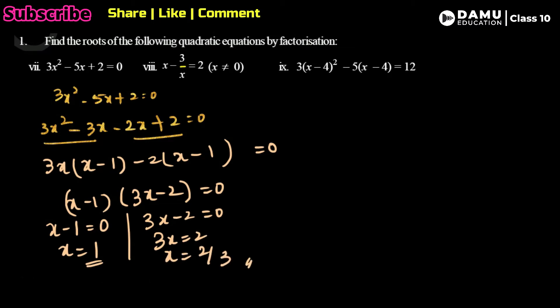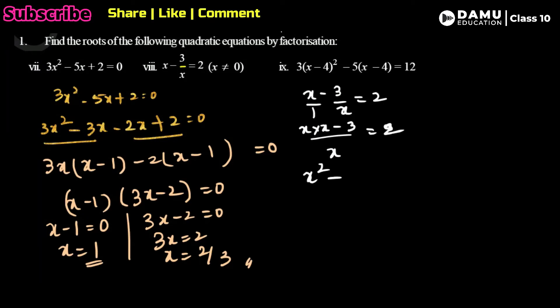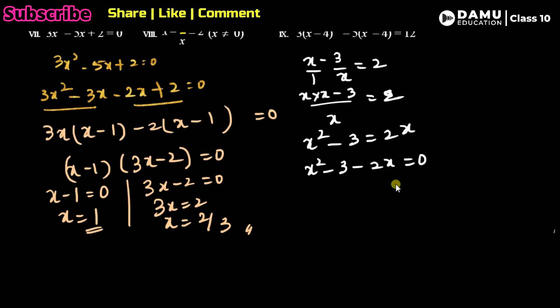The eighth problem is x - 3/x = 2, where x ≠ 0. Taking LCM as x and multiplying through: x(x) - 3 = 2x, giving x² - 3 = 2x. Rearranging: x² - 2x - 3 = 0.